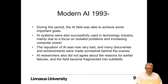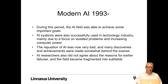Around the mid-1990s, the modern AI period started. AI systems were successfully used in the technology industry, mainly due to focus on isolated problems and increasing computer power. But the reputation of AI was very bad and many achievements were made somewhat behind the scenes. AI researchers didn't agree on reasons for earlier failures, and the field became fragmented into subfields. Today, a lot has happened with the deep learning boom, which has really raised expectations about what is possible with AI.